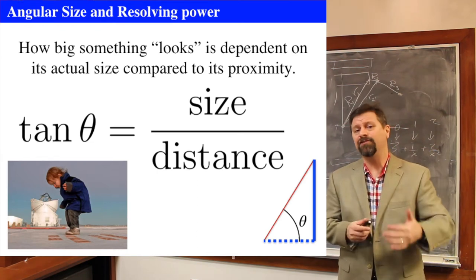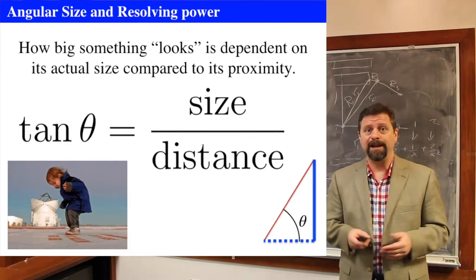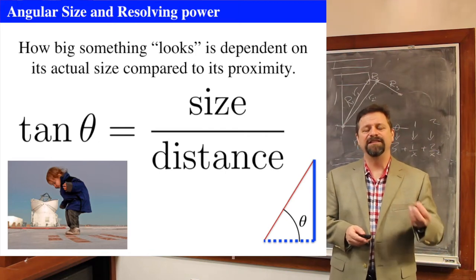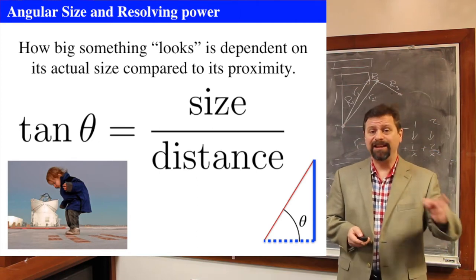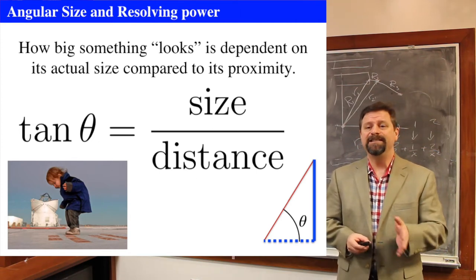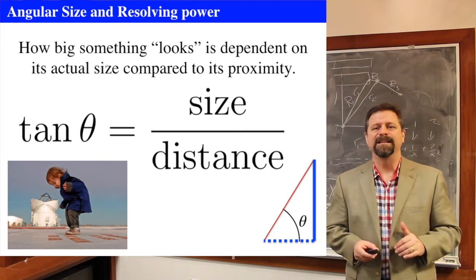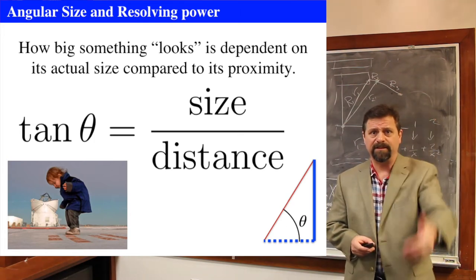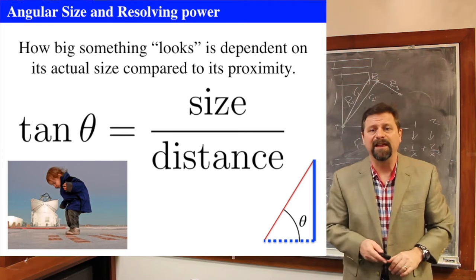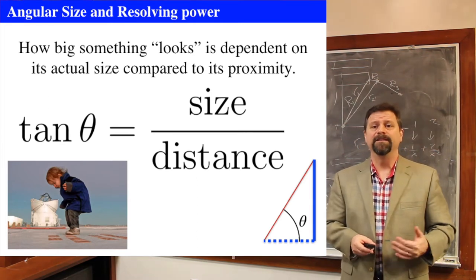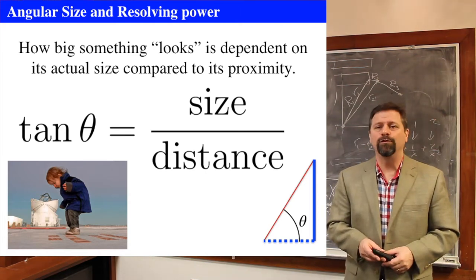The angular size of an object is really important to understand. The angular size is not the physical size — it's how big something looks, and that depends both on its actual size and its proximity. Going back to trigonometry, the tangent of an angle for a right triangle is simply the size of the object divided by its distance. The tangent of the angle that subtends is equal to that ratio.